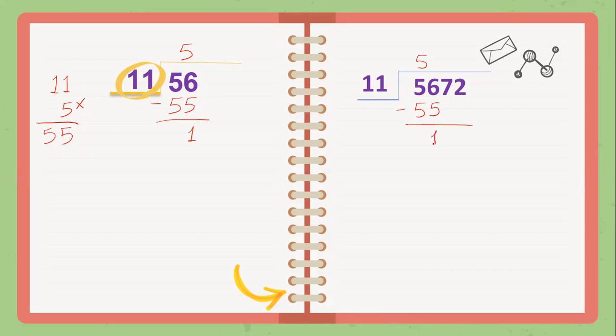Subtract. 6 minus 5 gives us 1. Bring down 7. Again, 11 times what gives us 17 or less? Let me think. Maybe 2.